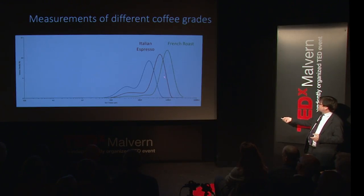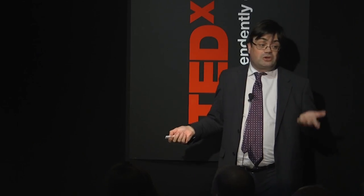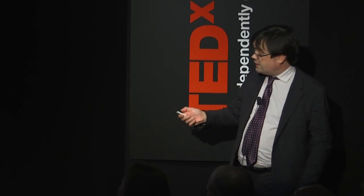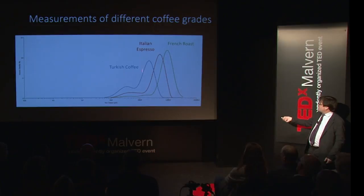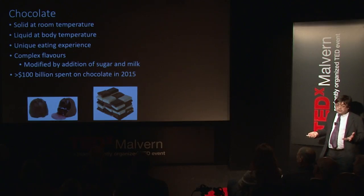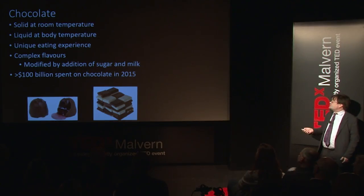A typical American-style blend has a fairly large particle size and produces a fairly mild taste. Espresso is much smaller, which is why it has a much stronger caffeine kick and stronger flavor. Turkish coffee has an even different size distribution and is even stronger than espresso. With so many fine particles, if you have Turkish coffee you can actually taste them in your mouth as well.